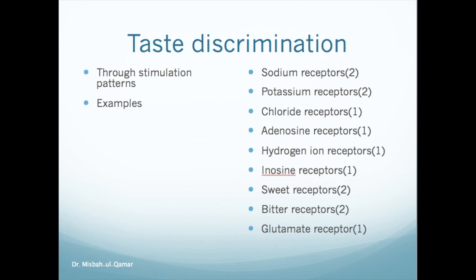The type of receptor protein and its specific action in each taste villus determines the type of taste that will be perceived. For sodium and hydrogen ions, specific ion channels open in the apical membranes of taste cells. For sweet and bitter taste, the portion of a receptive protein that protrudes through the apical membrane activates second messenger transmitter substances, resulting in intracellular chemical changes that elicit the taste signal.